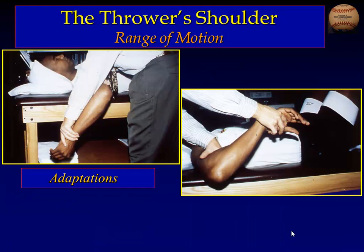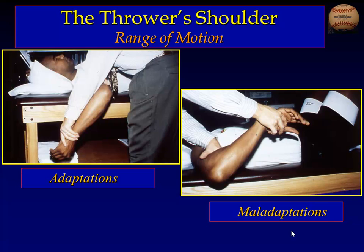We think of the adaptation of external rotation as almost advantageous. It increases our angular velocity, ball velocity, distance that we can throw, and so forth. But many times we think of this as a maladaptation, or something that leads to injuries or problems that will shortly ensue.